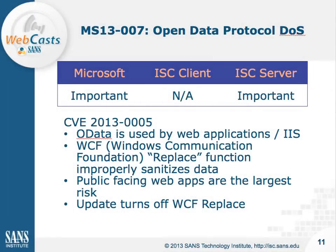Finally, bulletin MS-13-7 is a vulnerability in the Open Data Protocol — just a denial of service vulnerability, though that may be critical if it's a service your business relies on. OData is used a lot by web applications with IIS, and Microsoft provides the Windows Communication Foundation library to make it easy to write web services using OData. At risk is the replace function that improperly sanitizes data. If you have publicly facing web apps using these WCF libraries to provide OData services, you are at risk. The update simply turns off the replace function.